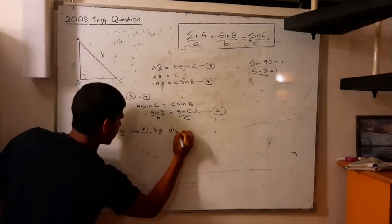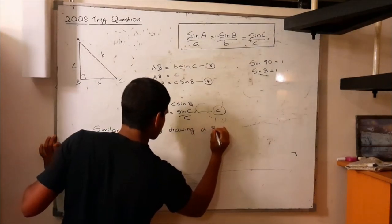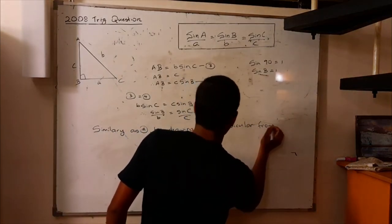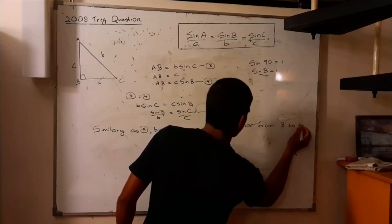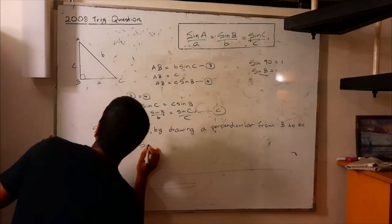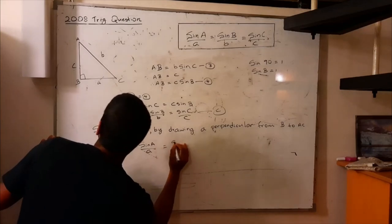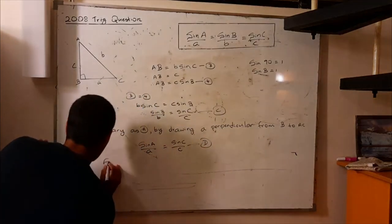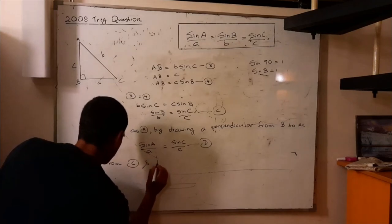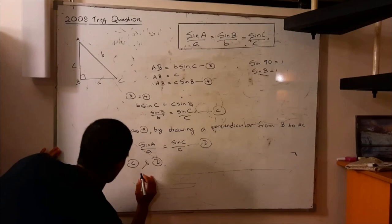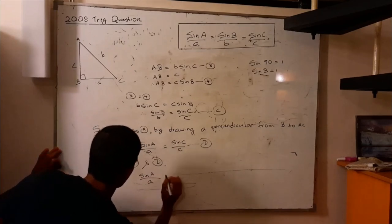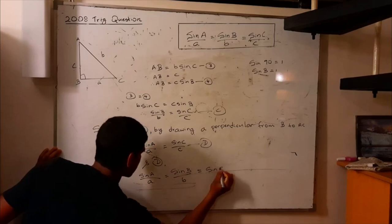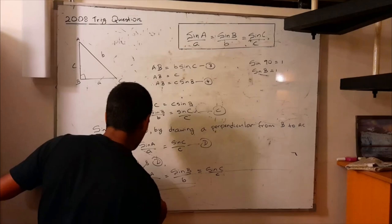By drawing a perpendicular from B to AC, we can say sin A over a equals sin C over c — equation D. Then from equations C and D, we can say sin A over a equals sin B over b equals sin C over c. And that is the sine rule proved for the right angle triangle.